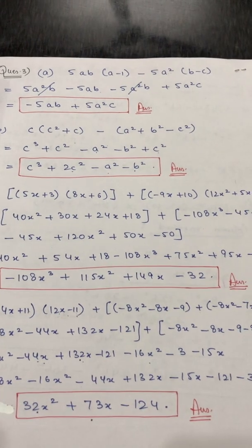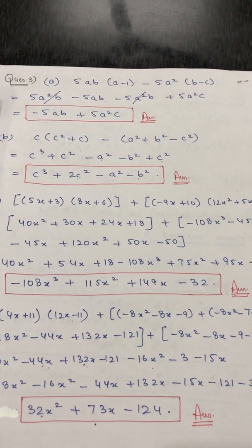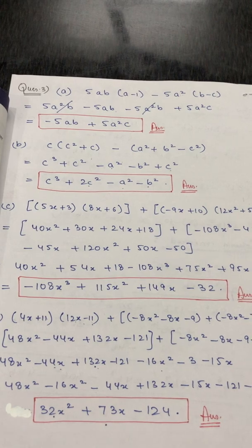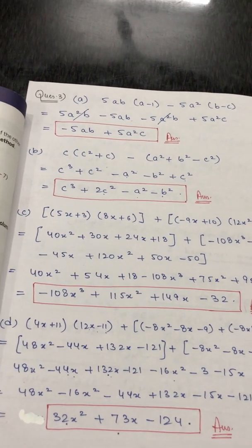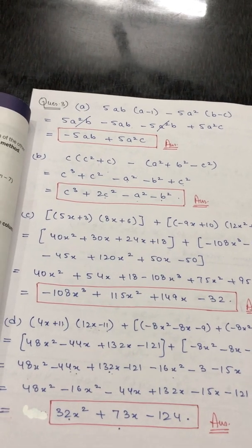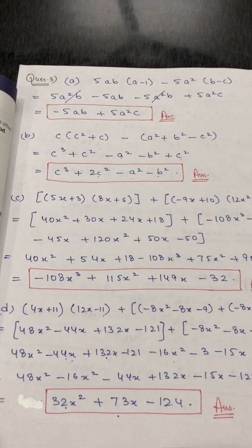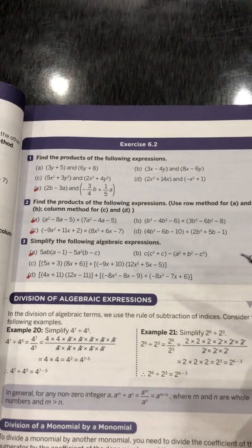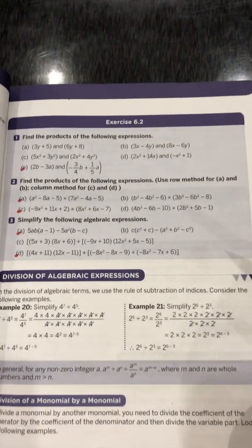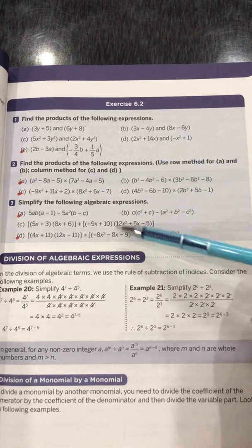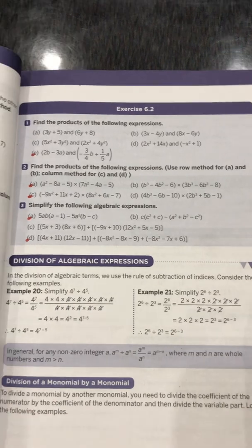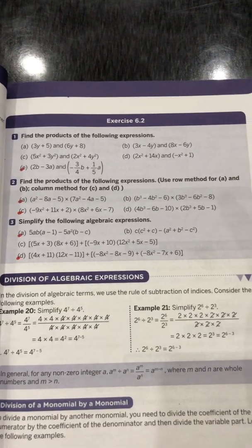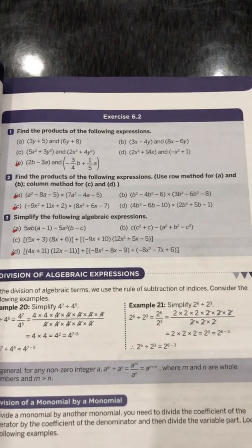In question three, you multiply the terms, open the brackets, and then check if any terms cancel or if terms with the same variable can be added or subtracted. This completes exercise 6.2. Some parts I have given as homework — do them carefully in the practice notebook first, then transfer to the fair notebook. For any doubts or if any steps are unclear, please call me anytime. Bye-bye, take care.